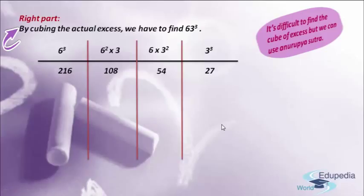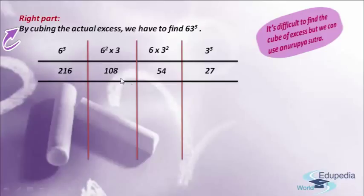After writing all the answers, let me place one more horizontal bar. Now I am going to double the numbers in the second part and the third part. In the third part I have 54, and if we double this number we get 108. The answer in the second part is 108, and if we double it we get 216.